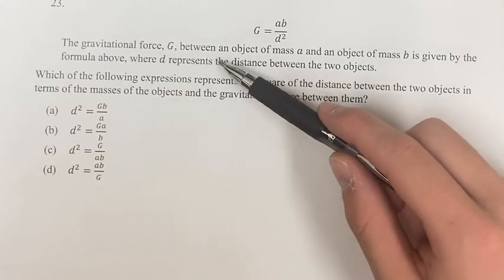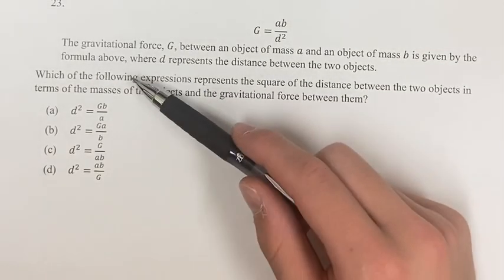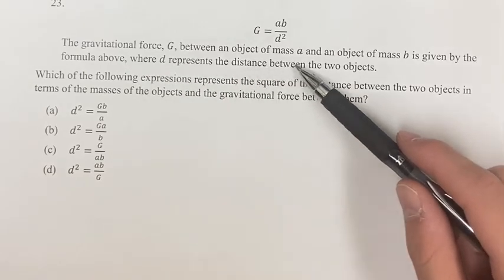we're told the gravitational force g between an object of mass a and an object of mass b is given by the formula above, where d represents the distance between the two objects.